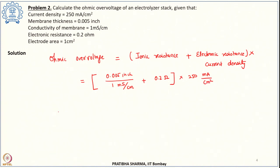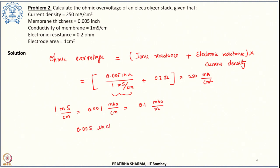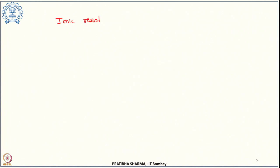Some unit conversions are required. 1 millisiemens per centimeter converts to 1 S/m, and the thickness of 0.005 inch converts to 0.000127 meter. Substituting these values, we get the ionic resistance as 0.000127 ohm.